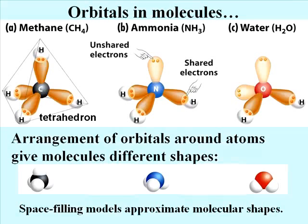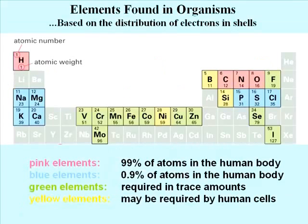Only carbon can form this shape, and then only when it shares its four electrons with four other atoms or chemical groups. Here's a part of the periodic table, which organizes the elements in order of atomic number in rows and of mass in columns.